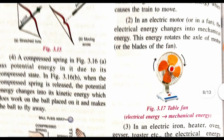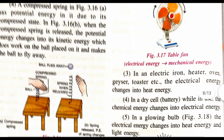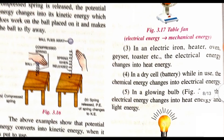In electrical motors, electrical energy changes into mechanical energy — the motor turns and the fan moves. In electrical iron, heater, oven, geyser, and toaster, electrical energy changes into heat energy.